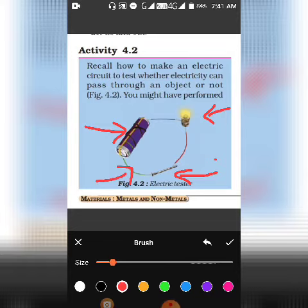The battery produces the current, the bulb is used for lighting up, and the wire is used for conducting the current.